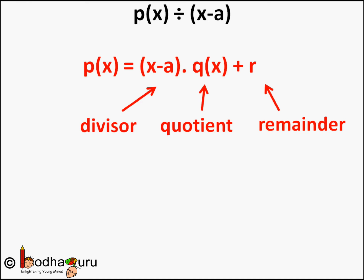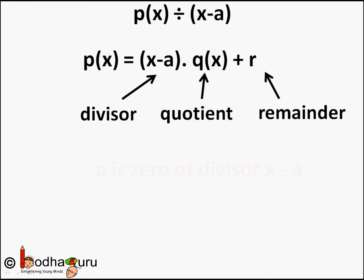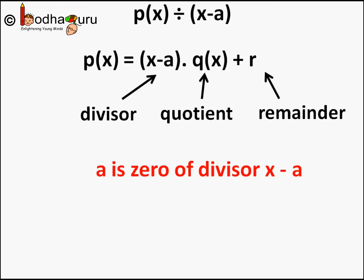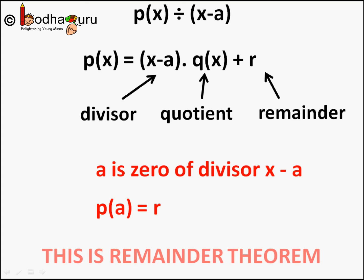We also learnt that the zero of a divisor (x − a) is a, and if we put a as the value of x in the polynomial — that is, we solve p(a) — we get the value of remainder r. In other words, finding the value of a polynomial at the zero of its divisor gives the remainder. This was the Remainder Theorem we learnt earlier — very useful to find the remainder without performing the division operation.